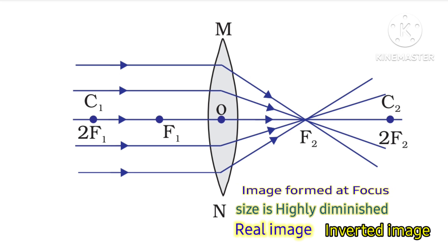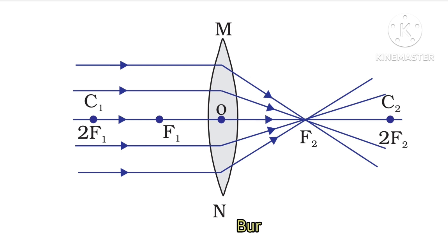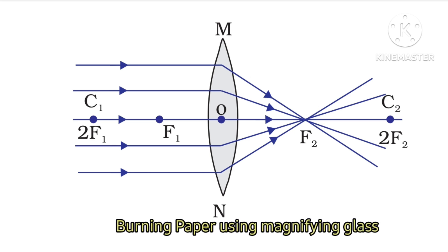A daily life application of this ray diagram is to burn paper. We use a convex lens where the object is at infinity, meaning the Sun is at infinity. The rays coming from the Sun are parallel, and this convex lens can converge the light rays at focus, which can burn the paper.